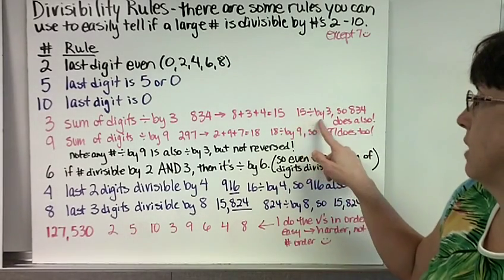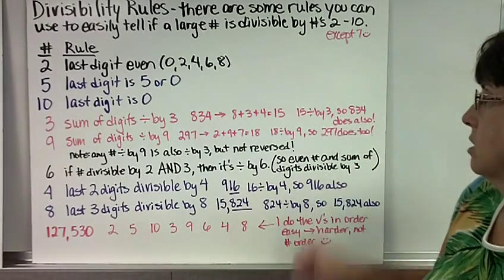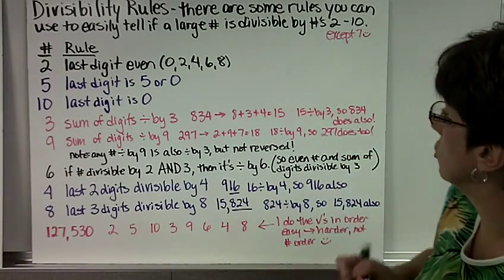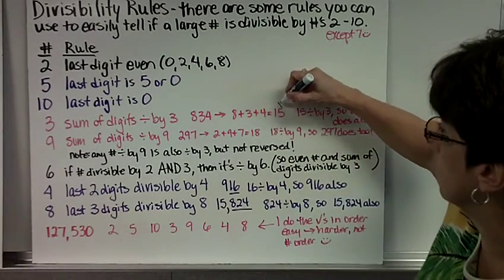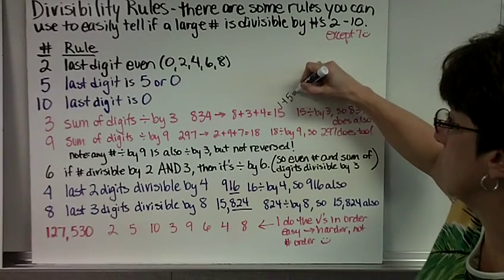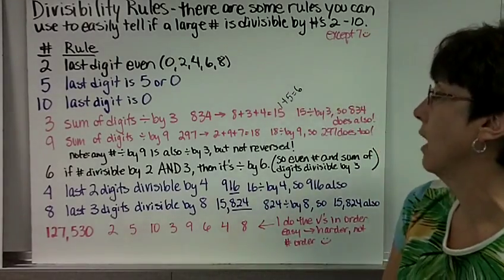I just wrote 15 divides by 3, so 834 does also. You could, even if you wanted to, you could say 15 is 1 plus 5 equals 6, and 3 goes into 6. Now 9 is the same rule except the sum of the digits is divisible by 9.